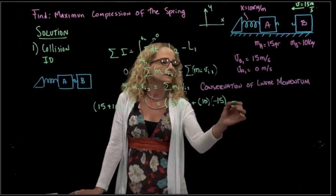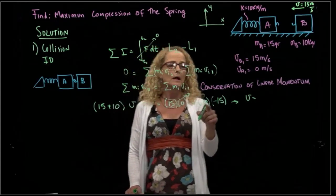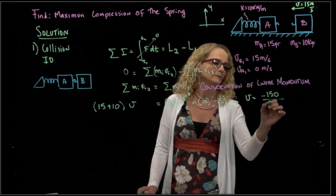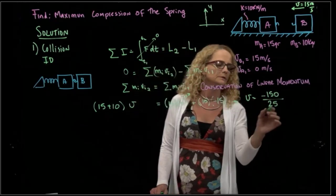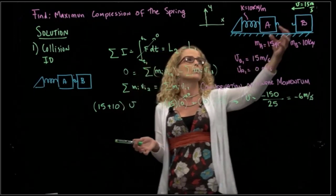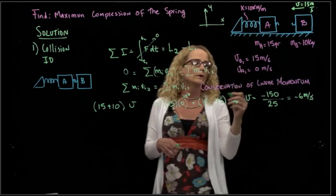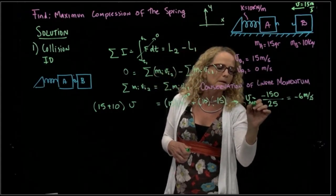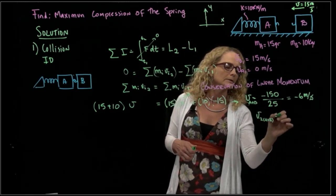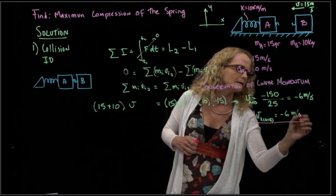So for that velocity, we find that that velocity will be, this is zero, right? Because it's 15 times zero. That will be minus 150 divided by 25 equals 6, so negative 6 meters per second. So it means that when they collide, they keep going in the negative x direction. So we have that this is block A plus block B. They move together. So final velocity of A and B equals negative 6 meters per second.